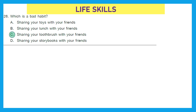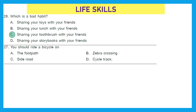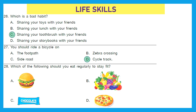So the bad habit is option C — sharing your toothbrush with your friends, because it impacts your oral hygiene. Question 27: You should ride a bicycle on the footpath, zebra crossing, side road, or cycle track? The right answer is option D — cycle track. Question 28: Which of the following should you eat regularly to stay fit?